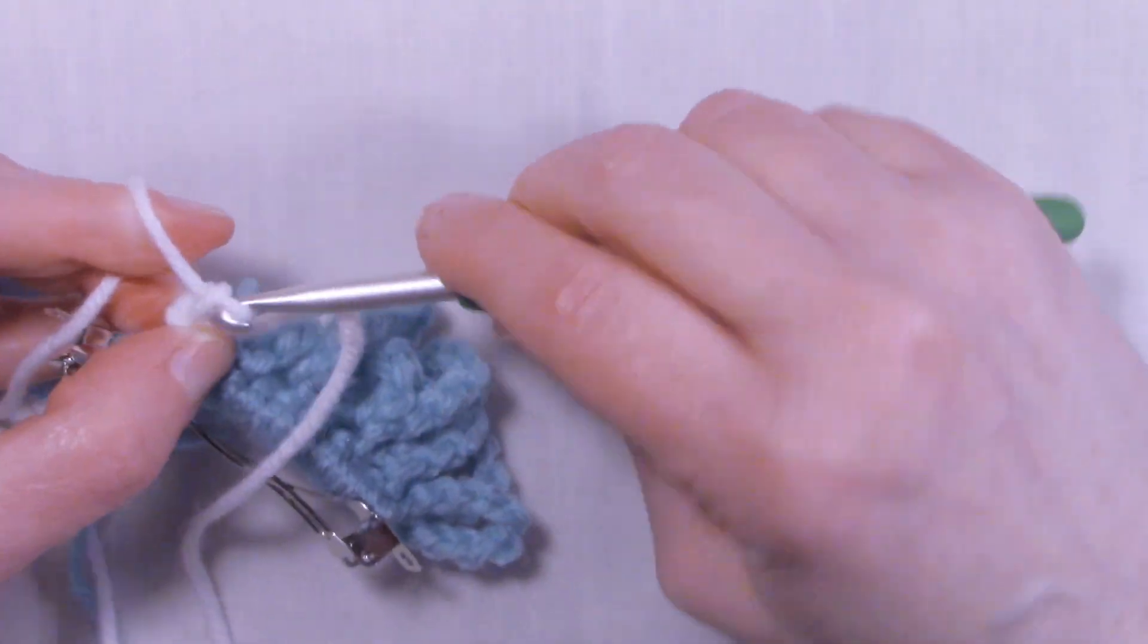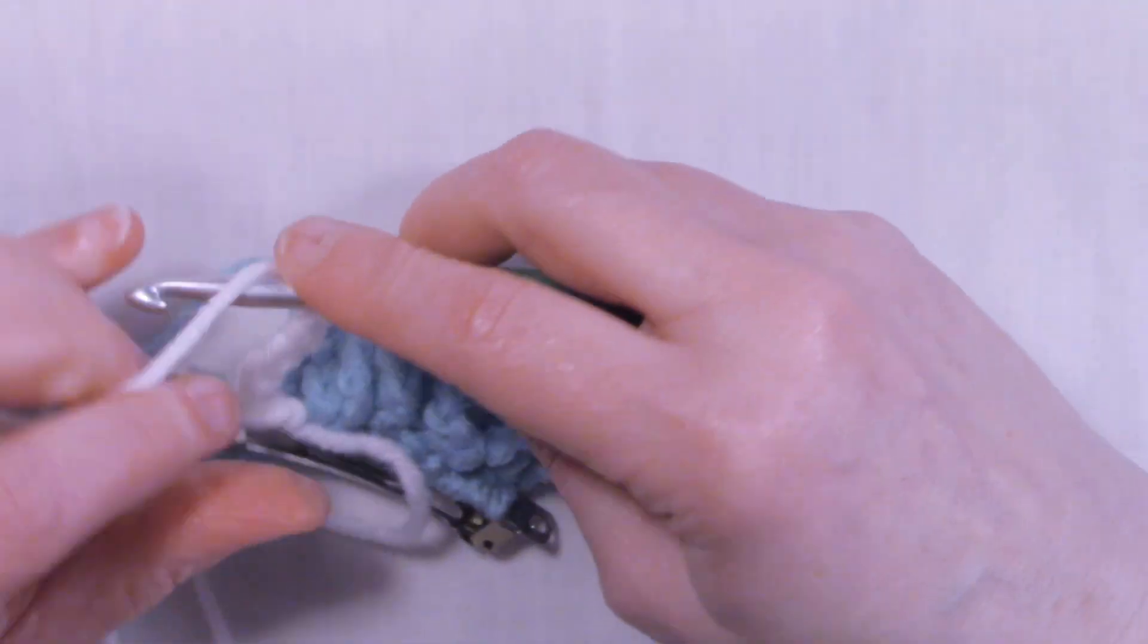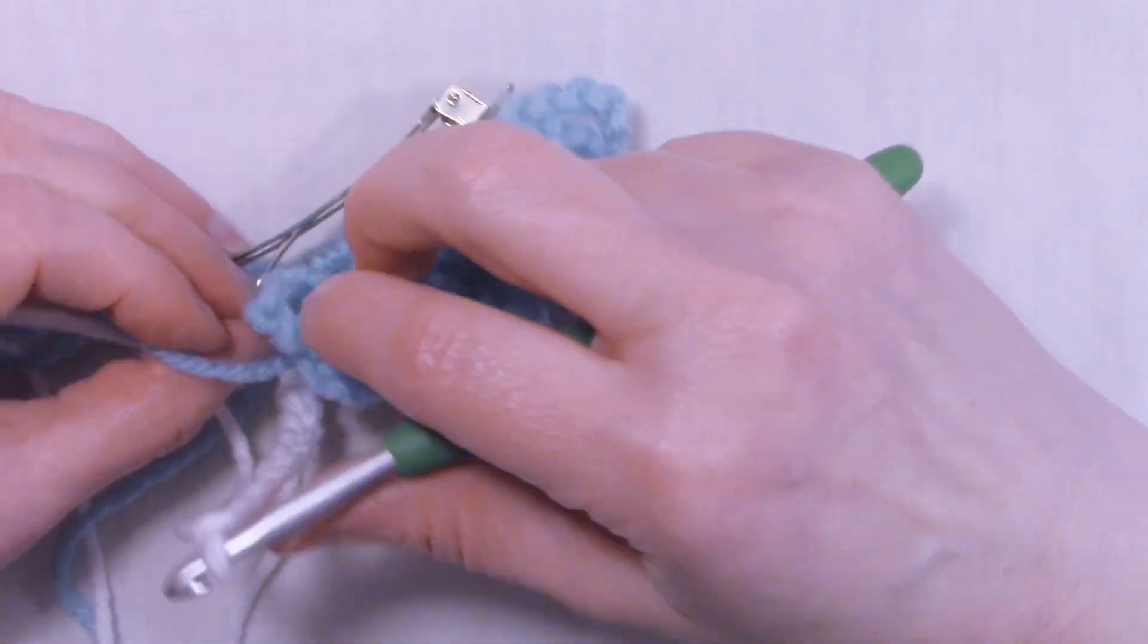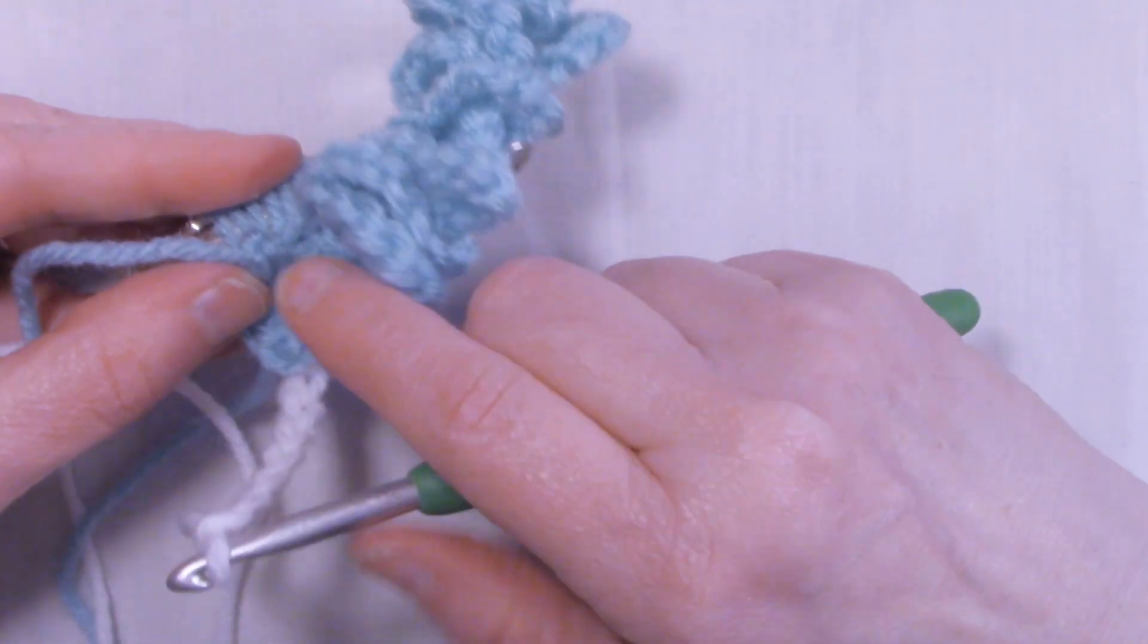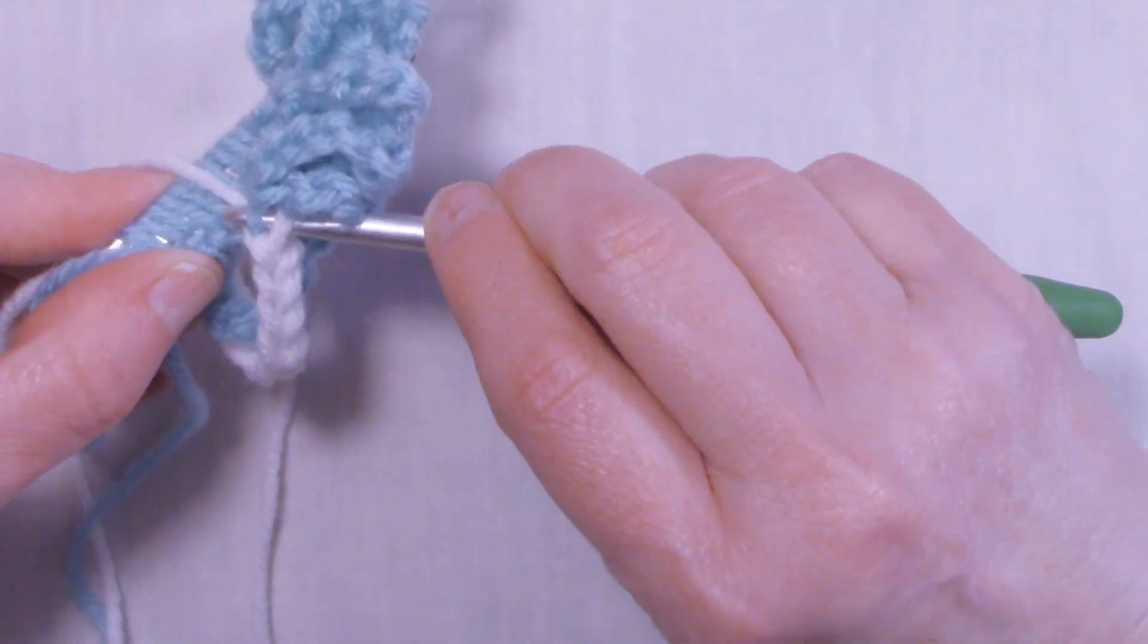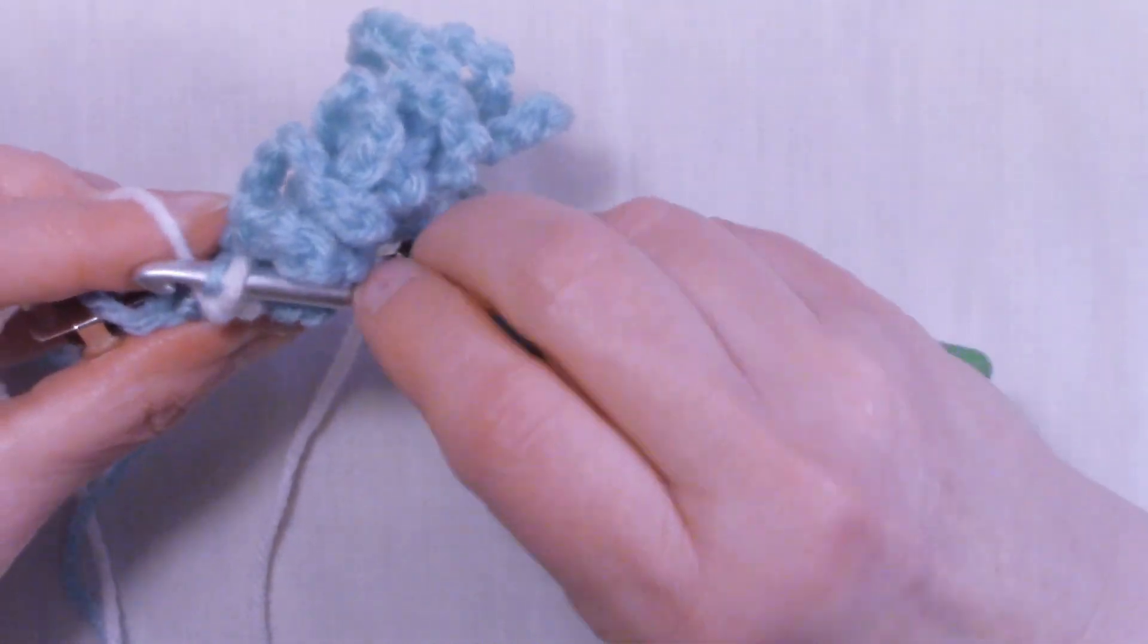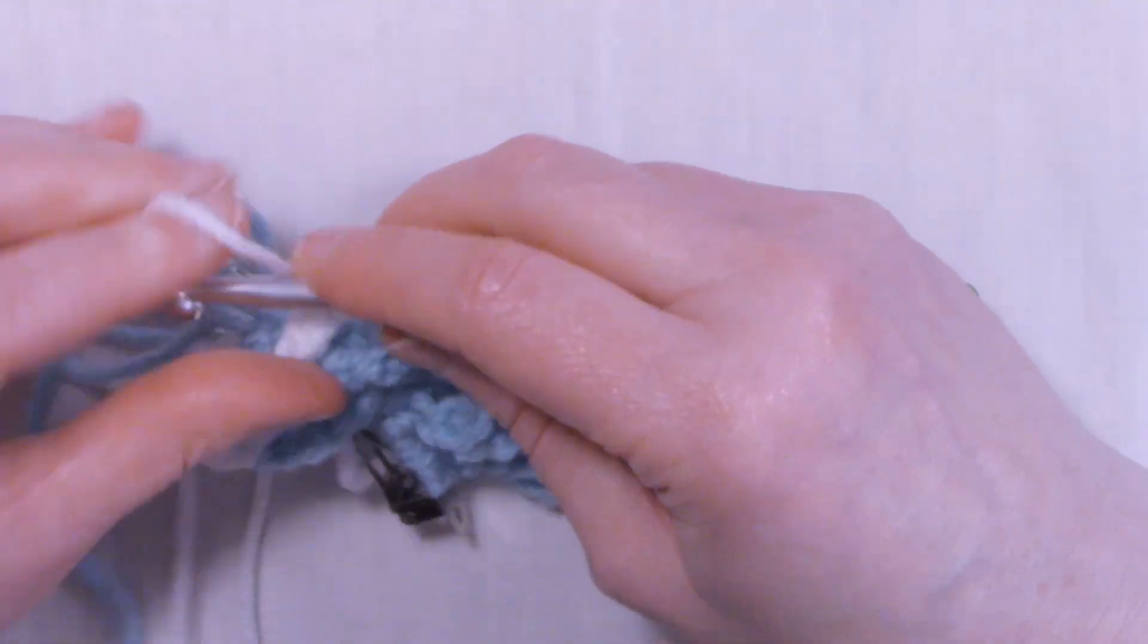And just like before, we're going to chain 10. And then we're going to look for the free loops that we did not use, and we're going to slip stitch into those free loops. So bring your yarn over and slip stitch into that loop, just like that. And then chain 10 again.